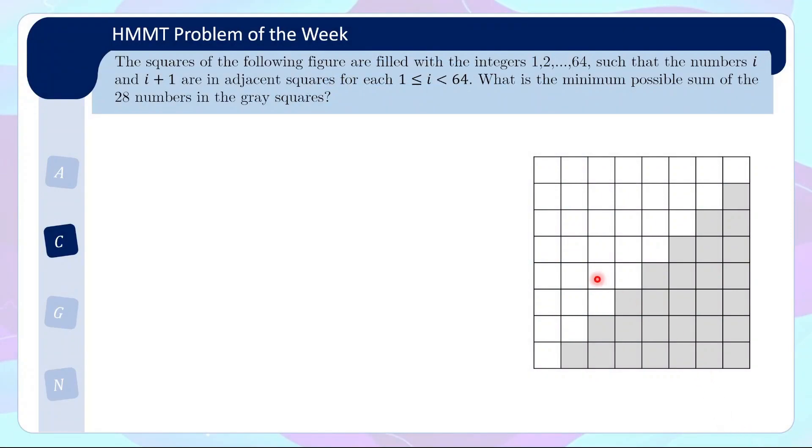This problem involves an 8×8 square being filled with integers 1 to 64 such that the numbers i and i+1 are in adjacent squares for all i from 1 to 64. So for example, you could start with 1 here and then go 2, 3, 4, 5, 6, 7, 8, 9 and so on going around the square until you fill up all 64 numbers. Now what is the minimum possible sum of the 28 numbers in the grey square? You might try and fit the numbers 1 to 28 inside here but you will realize that it's actually not possible.